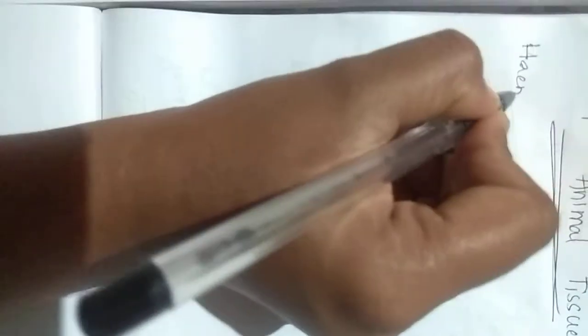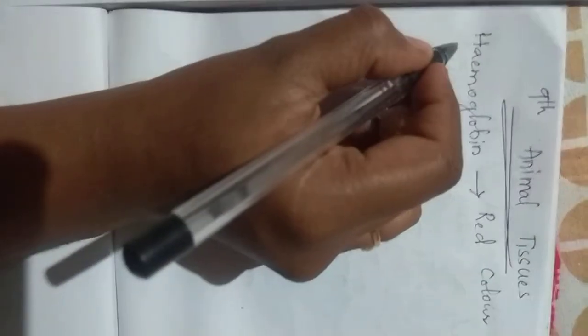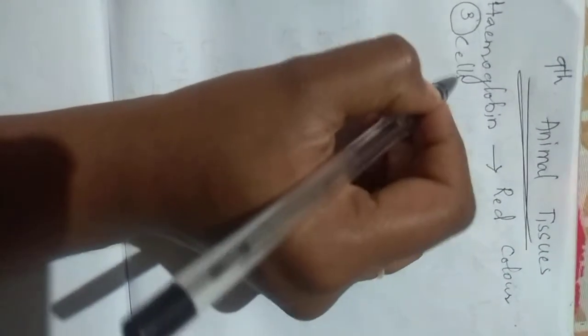Blood will be red in color because of the presence of a protein called hemoglobin. Hemoglobin is a protein which is resulting blood to look red color. And I said blood is having different types of cells. There are majorly three types of cells in blood.